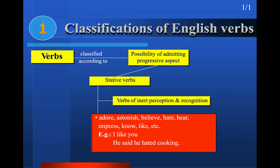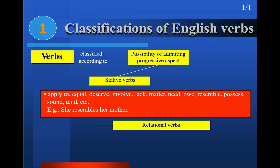For example, 'I like you' — you cannot say 'I'm liking you.' This verb is continuous by default, so it does not need -ing to make it continuous. Similarly, 'he hated cooking' — you cannot say 'I'm hating cooking' because 'hate' is continuous by form already. Relational verbs such as 'apply,' 'equal,' 'deserve,' 'involve,' 'lack,' 'matter,' 'need,' 'resemble,' 'possess,' 'sound,' 'tend' also cannot take the continuous aspect.